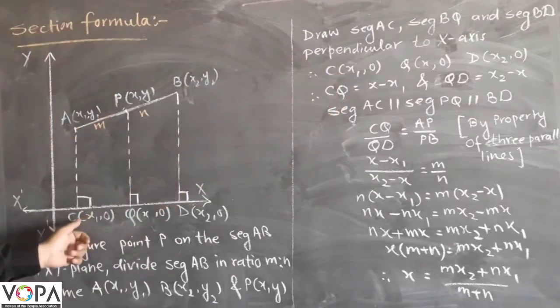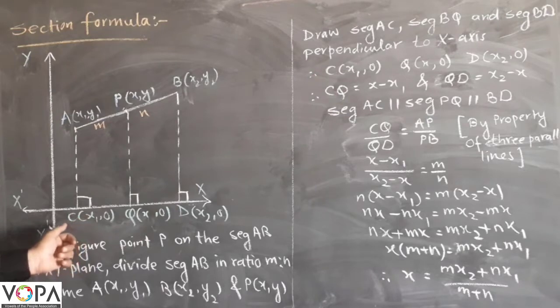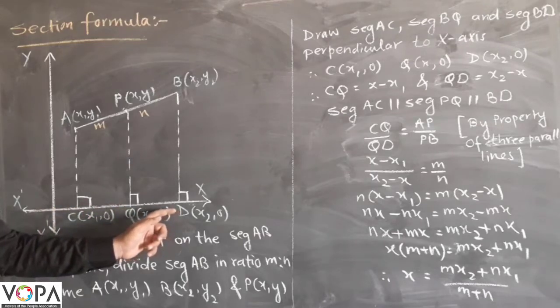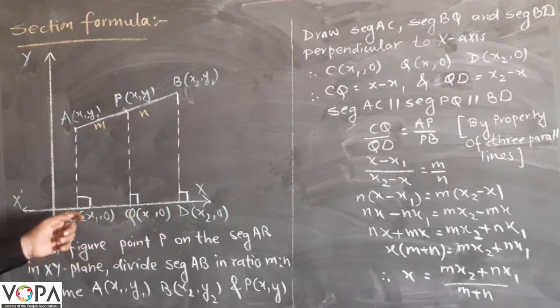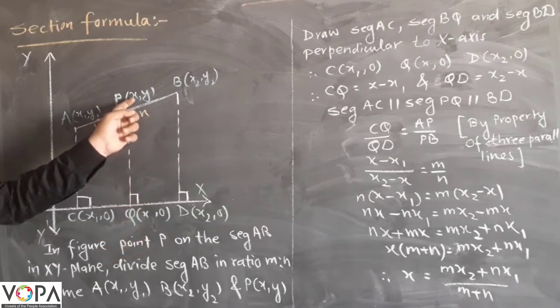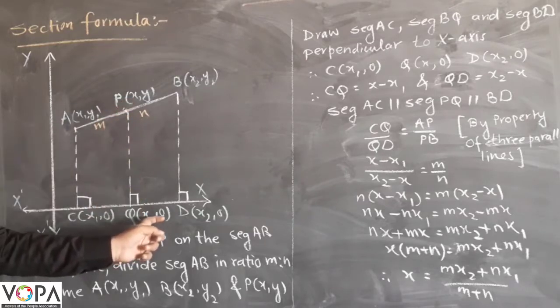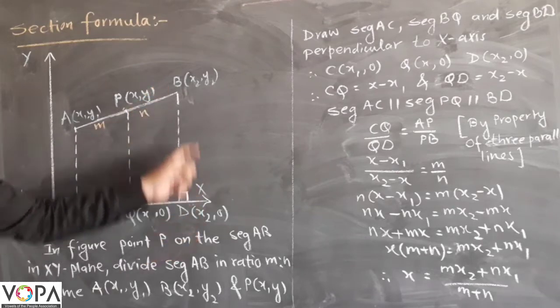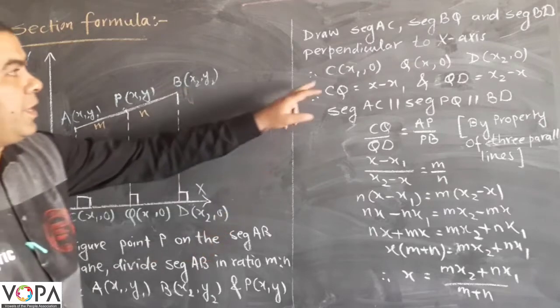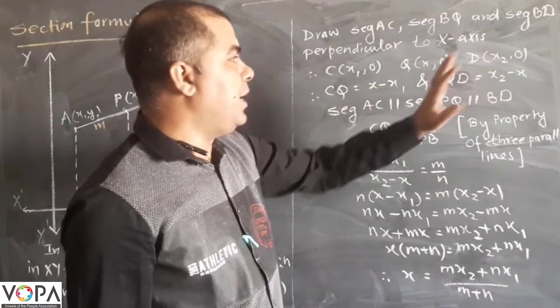Therefore the coordinates of C will be X1, 0. Why we have written this 0? Because the Y coordinate on X axis is always 0. Similarly the coordinate of Q will be X, 0 and the coordinate of D will be X2, 0. Here we have written coordinates of C, Q and D.